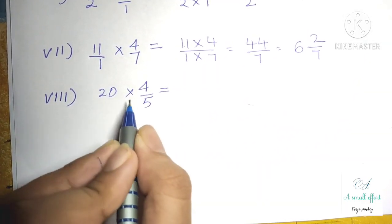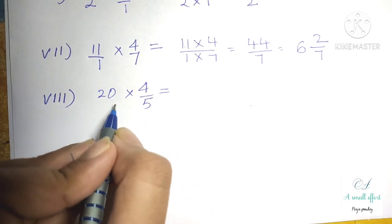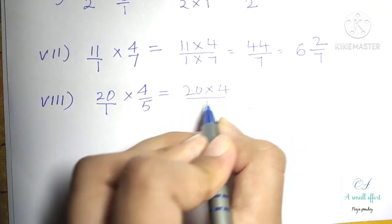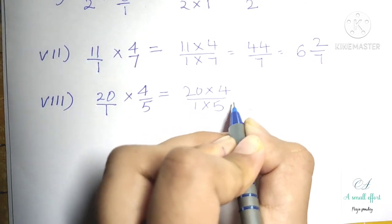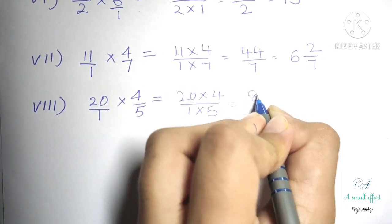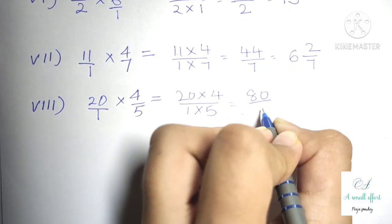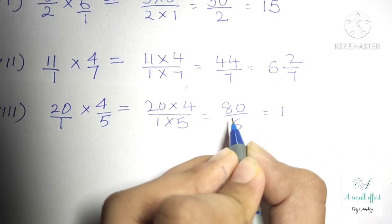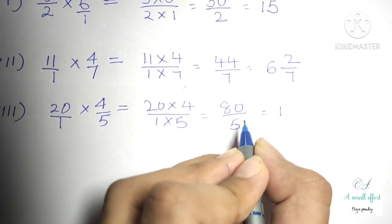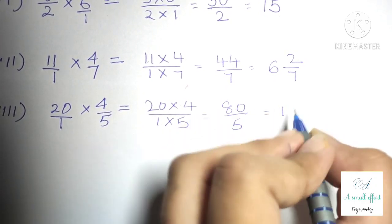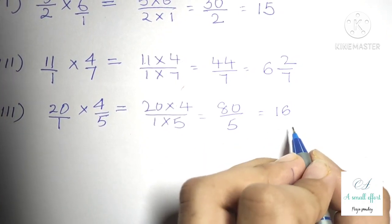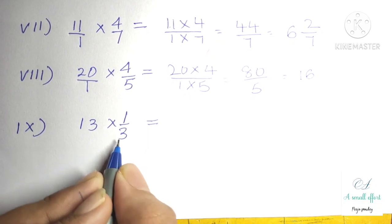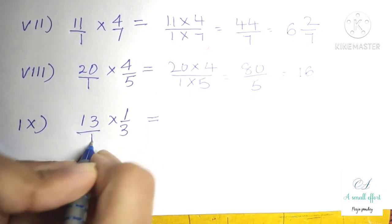Question number 3 part 8 is 20 into 4 by 5. We can write 20 as 20 by 1, multiply numerator with numerator and denominator with denominator: 20 fours are 80 by 5. In the 5 times table, 80 comes 16 times. So our answer is 16.